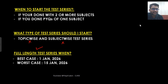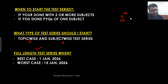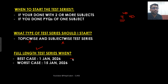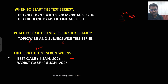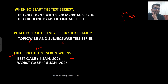In topic-wise and subject-wise tests, consider a student who has covered only 4 subjects — they'll write those 4 subjects' tests. But in the full-length test with all 10 or 11 subjects, they won't perform well. How you perform when all subjects come in front of you is what matters. Even if some students are good in only 2 or 3 subjects, if you are average in all subjects, you will still perform well in full-length tests. Your rank in topic-wise or subject-wise tests — whether AIR 1, AIR 50, or AIR 100 — doesn't matter at all.